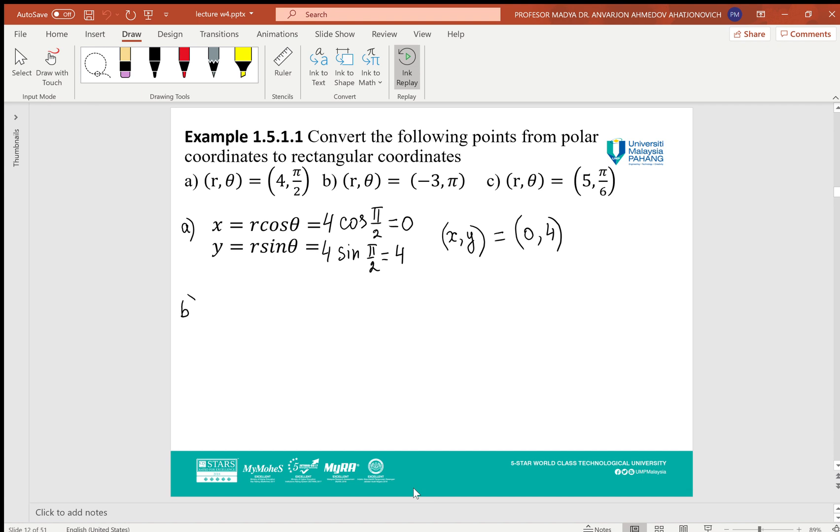Part b: (r, θ) = (-3, π). We apply the same formulas to find (x, y). x = -3 cos π = -3(-1) = 3, and y = -3 sin π = -3(0) = 0. So the rectangular coordinates are (3, 0).